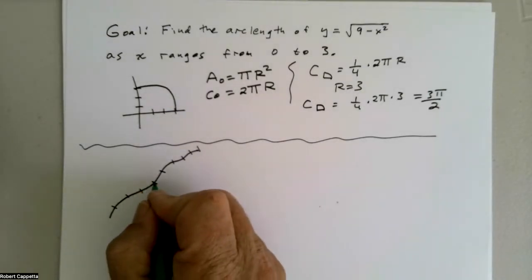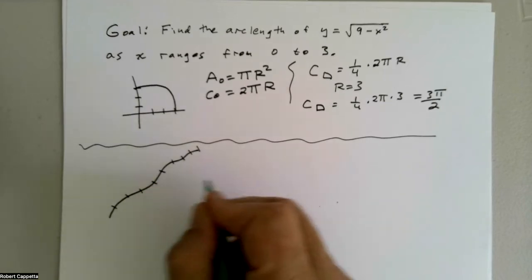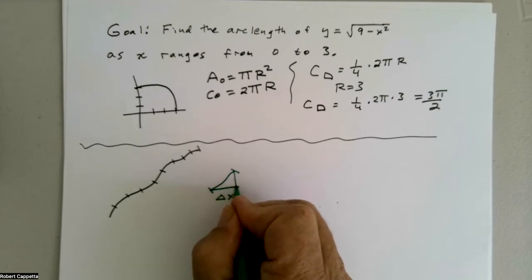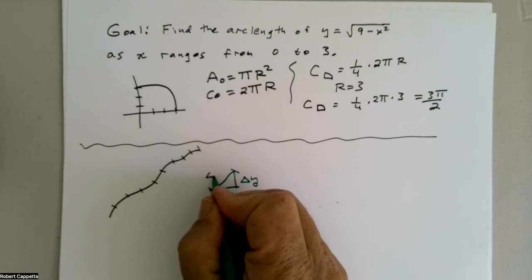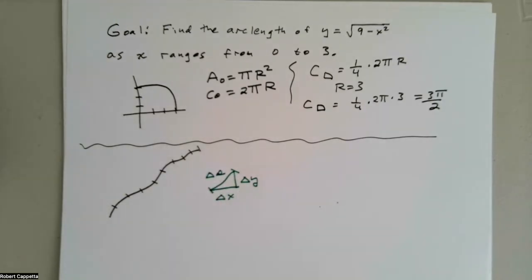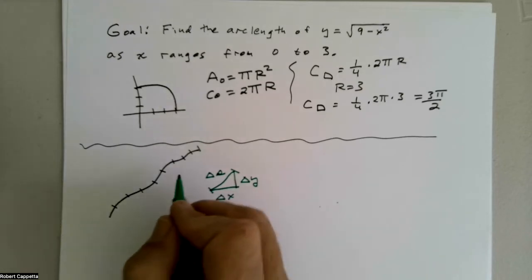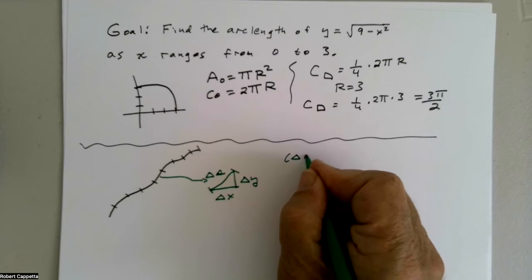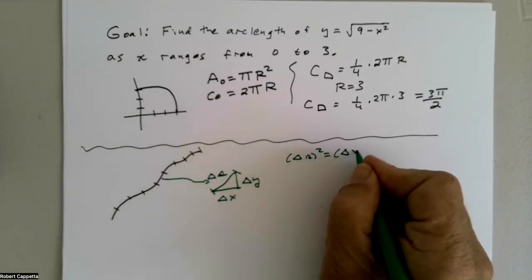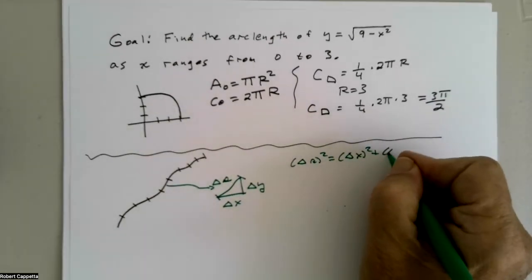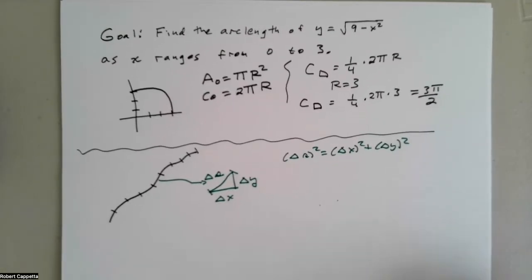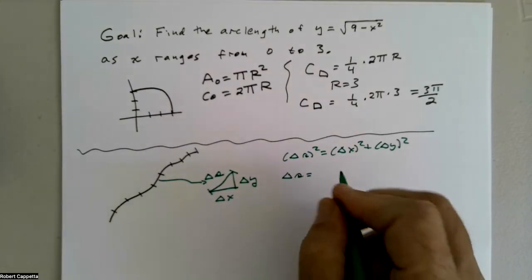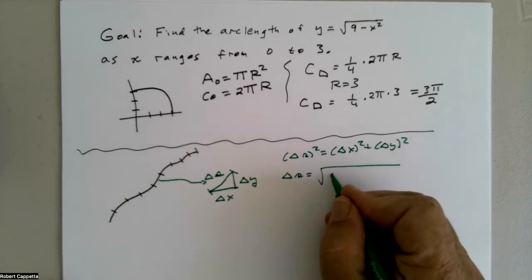Let's visualize one small part of the curve from here to here. Approximately, this horizontal piece is called Δx, this vertical piece is Δy, and this arc length piece is Δs — we use the letter s for arc length. From Pythagoras: Δs² = Δx² + Δy². Taking the square root: Δs = √(Δx² + Δy²).